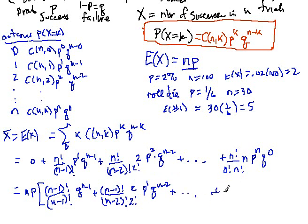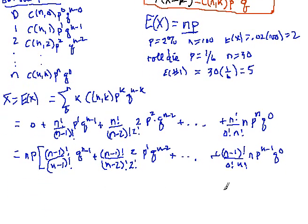The last term, I'd factor out an n. That gives me n minus 1 factorial divided by 0 factorial times n factorial. And I've got that scalar that gets multiplied here, n. So this is p to the n minus 1 times q to the 0.